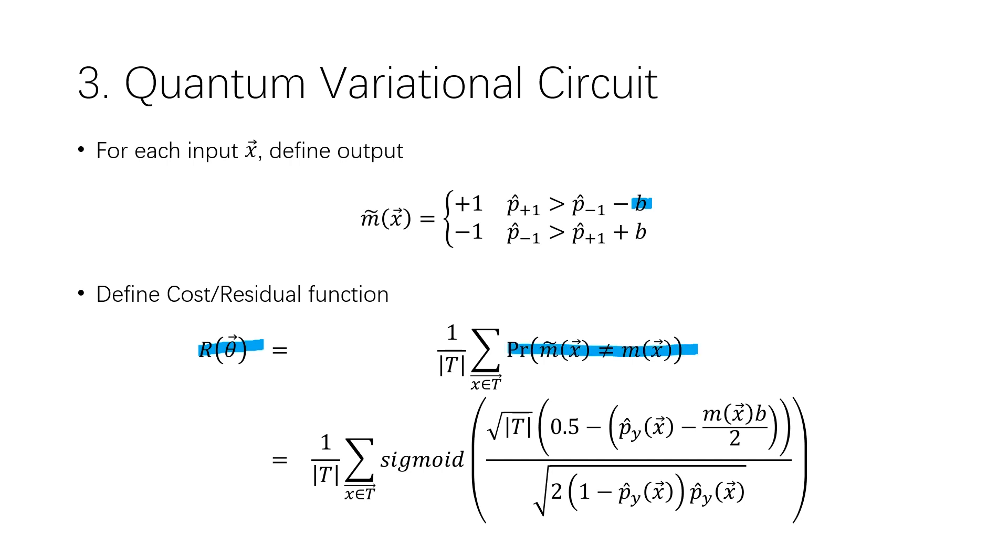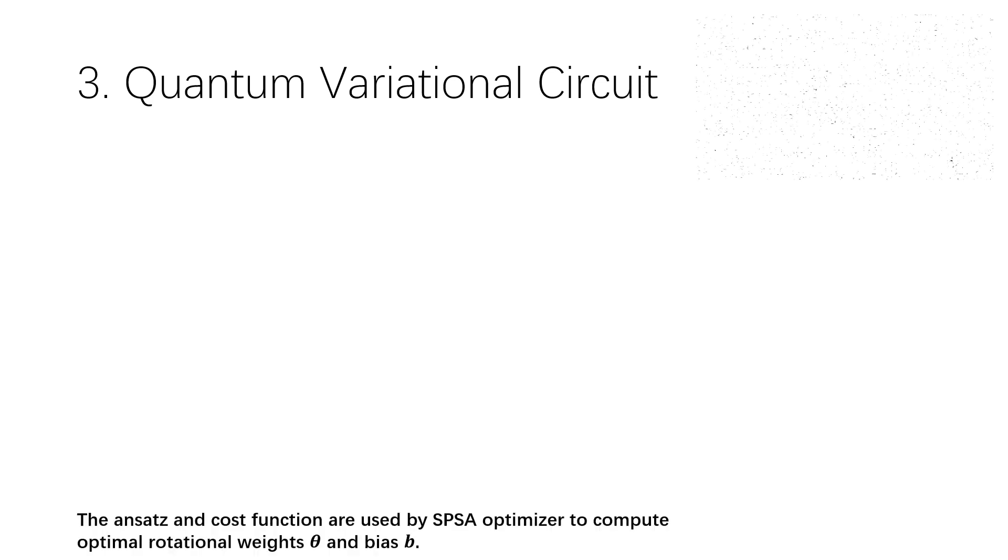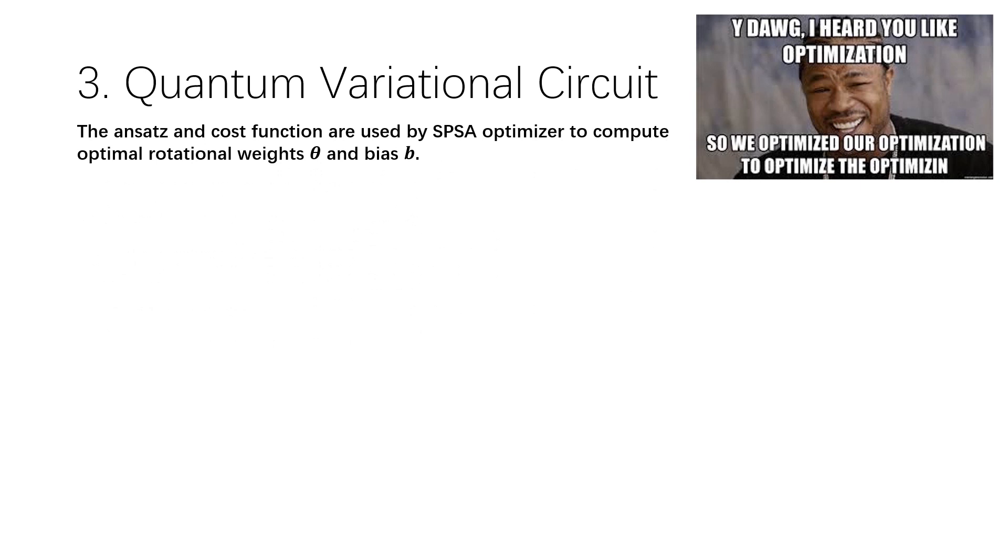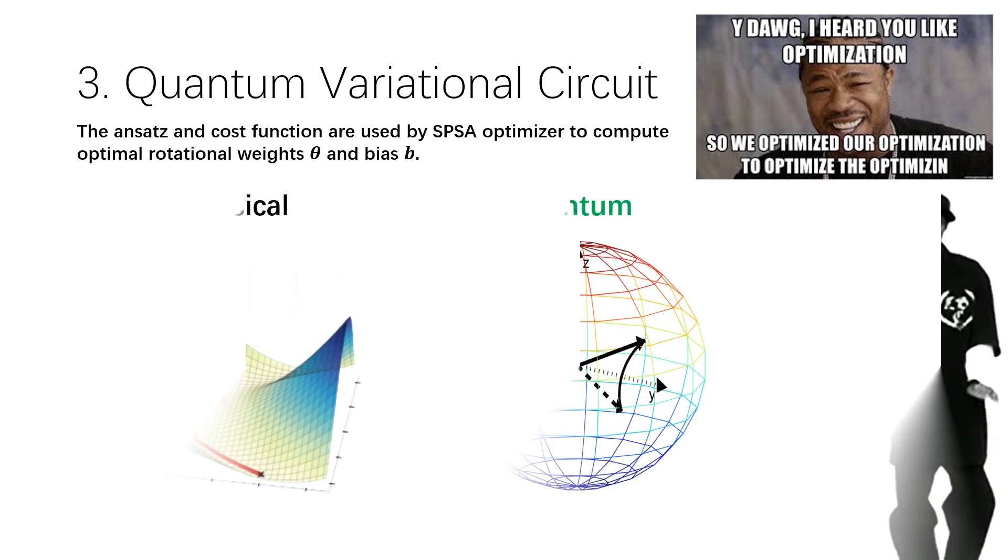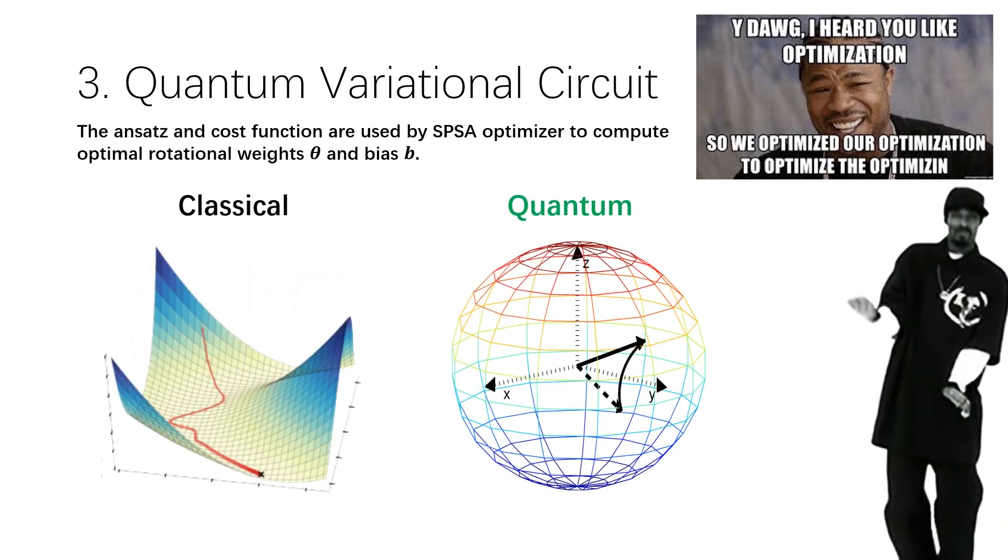Notice the function of distribution p, you obtain by measuring the ansatz and the bias parameter b. Lastly, this is to be run on the optimizer recursively. The error function will be minimized, giving us an optimal theta and bias b to classify data sets. The gradient descent is done on the Bloch sphere instead of the linear search as in the classical approach.